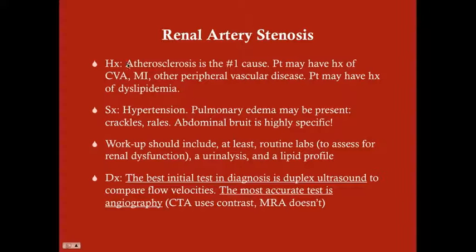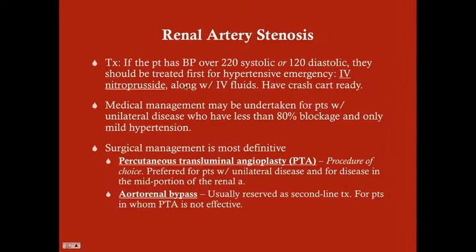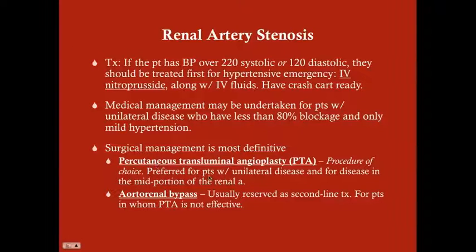The most important takeaways: approach ABCs first — if blood pressure is more than 220 over 120, treat the hypertensive emergency with IV nitroprusside. Otherwise, patients with renal artery stenosis are treated with PTA in most cases, and generally PTA is sufficient — patients recover quite well from this therapy.